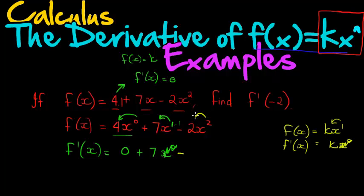Okay, minus, and the 2 multiply, this negative 2 becomes negative 4, x to the power of 1, 2 minus 1 is 1. And there is my derivative.